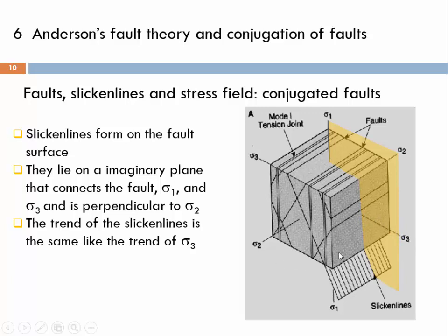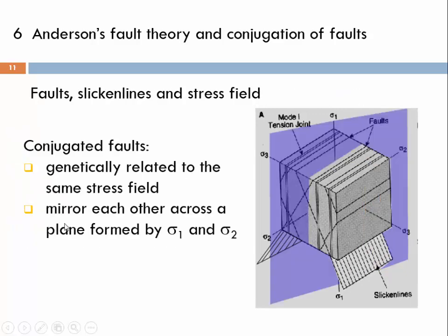This is quite useful: if Anderson's fault theory applies, you can determine the trend of sigma 3 by measuring the trend of the slickenline. Adding the conjugated fault, the sigma 1–sigma 2 plane forms a mirror plane for the conjugated fault structures. One fault dips away and the other dips toward you, and the plane through sigma 1 and sigma 2 is the mirror plane for these two.